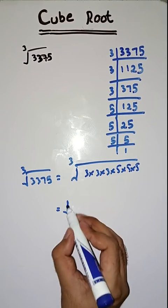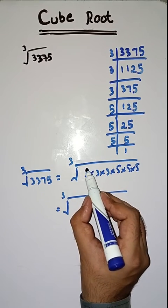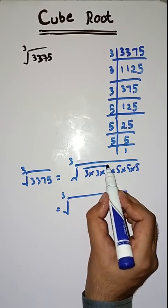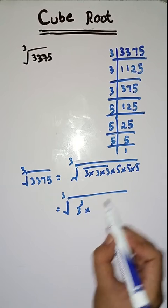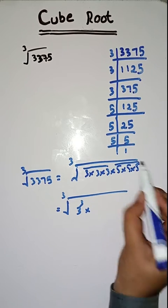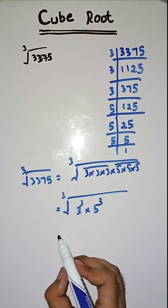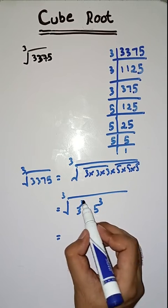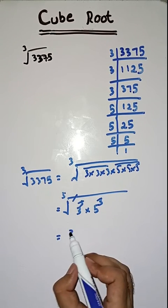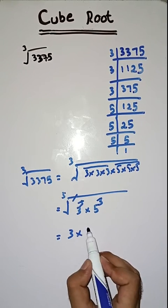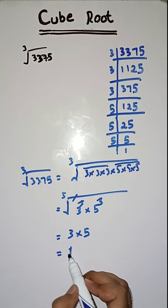Now students, what we have to do — we have to make pairs of its prime factors. Since 3 appears 3 times, we can write it as 3 to the power 3. 5 is also 3 times, so we can write it as 5 to the power 3. Now the power 3 and the cube root will cancel. We are left with 3 × 5, which equals 15.